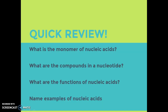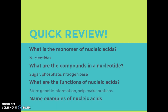One last quick review: the monomer of nucleic acid is nucleotides. The compounds in a nucleotide are the sugar, the phosphate, and the nitrogen base. The functions of nucleic acids are to store genetic information and help us know how to make our proteins. The two big examples are DNA and RNA.